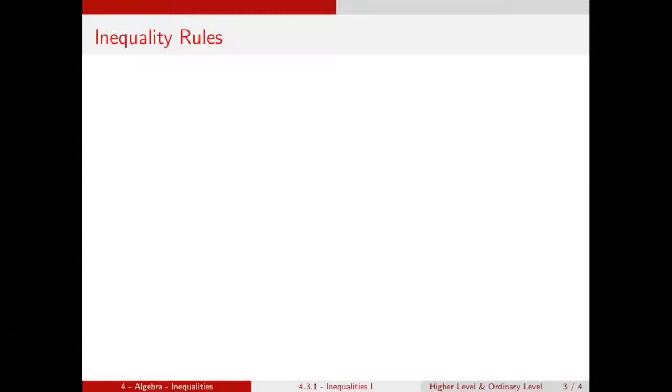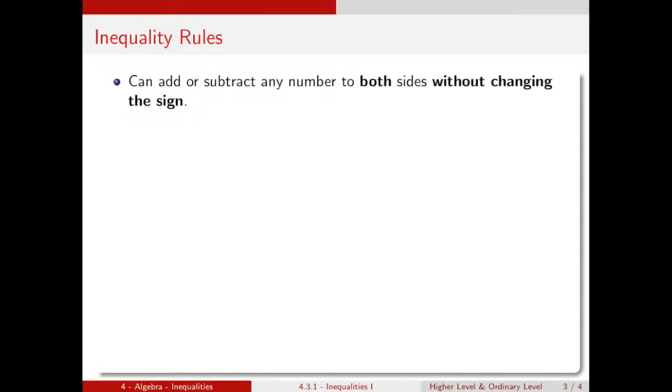Let's talk now about some rules we use when working with inequalities. Rule 1. We can add or subtract any number to both sides without changing the sign. So for example, 4 is greater than 3, because 4 is a bigger number than 3 is. We can add a 2 to both sides, so 4 plus 2 is greater than 3 plus 2, and then that becomes 6 is greater than 5, which we know is true.